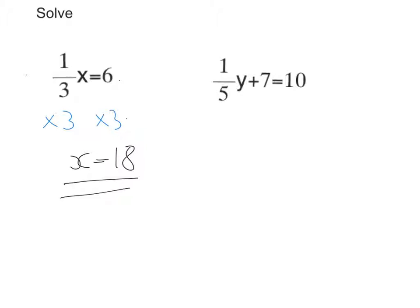Let's move on to the second one. So the first thing I'm going to do is move that 7, the thing that's adding to the fifth y. So I do the opposite to both sides, it's adding 7, so I take away 7 from both sides.